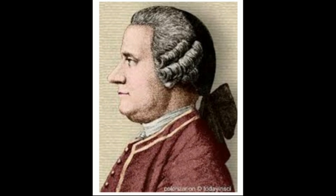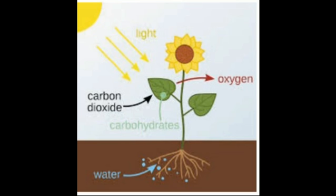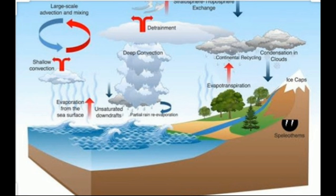During 1732–1799, John Ingenhousz showed that sunlight is essential for plants to carry out photosynthesis and also to purify air that is fouled by breathing animals or by burning candles. From this experiment, it was clear that air is a composite mixture of many gases, including oxygen and carbon dioxide.